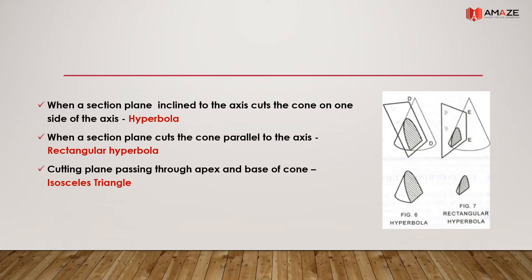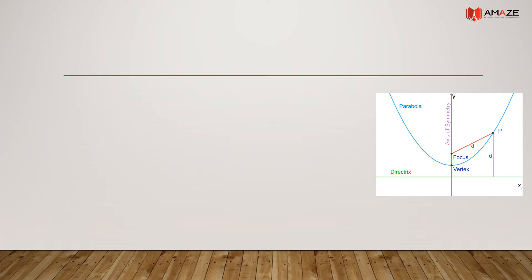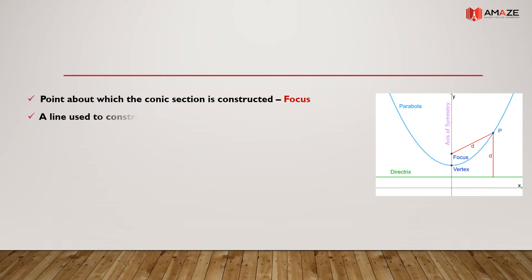A cutting plane passing through the apex and base of the cone gives us an isosceles triangle. The point about which the conic section is constructed is its focus, and the line used to construct and define a conic section is its directrix.